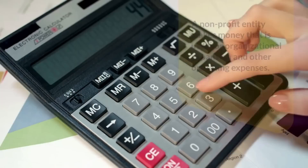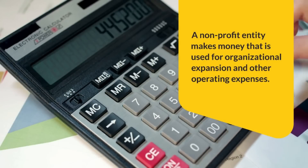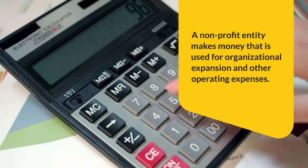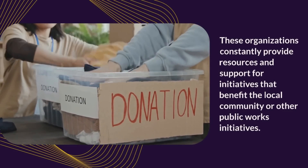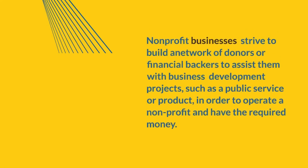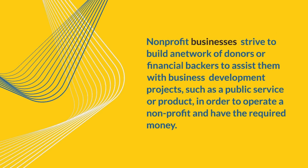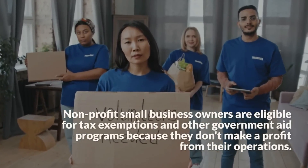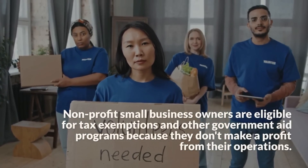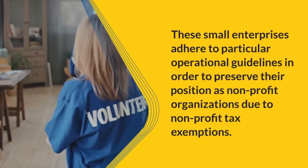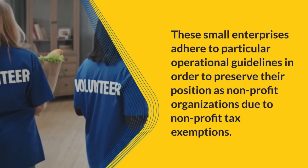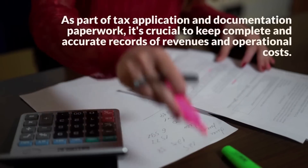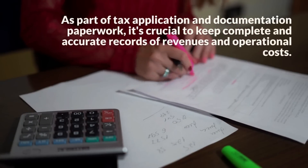5. Nonprofit. A nonprofit makes money that is used for organizational expansion and other operating expenses. These organizations constantly provide resources and support for initiatives that benefit the local community. Nonprofits strive to build a network of donors or financial backers to assist them with business development projects such as a public service or product. Nonprofit organizations are eligible for tax exemptions and other government aid programs because they don't make a profit from their operations. Nonprofits adhere to particular operational guidelines in order to preserve their position as nonprofit organizations. As part of tax application and documentation paperwork, it's crucial to keep complete and accurate records of revenues and operational costs.